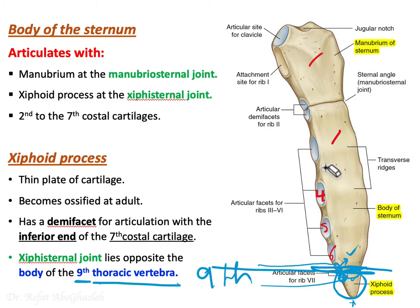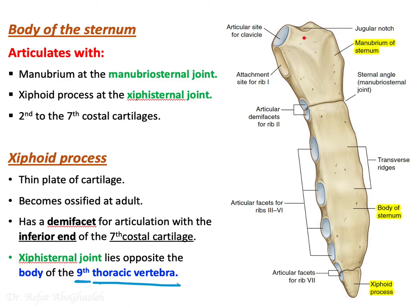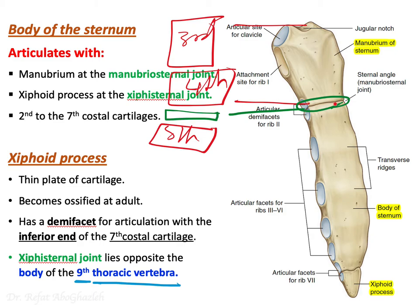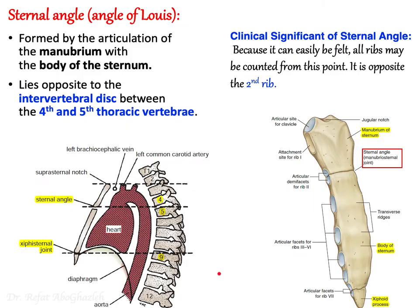A useful memory aid for surface anatomy: the manubrium is at the level of T3 and T4. The sternal angle is at the level of the intervertebral disc between T4 and T5. Adding 4 and 5 gives 9, so the xiphisternal joint is at the level of T9.